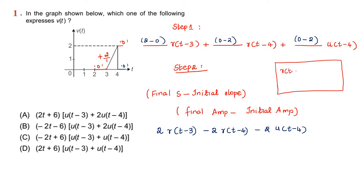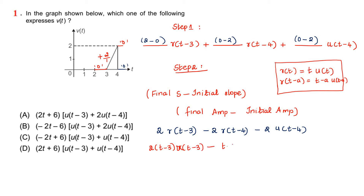How to write R of t minus 1? R of t is the unit ramp signal, written in terms of unit step as t into U of t. For example, R of t minus 3 is equal to t minus A, U of t minus e. In the similar manner, how to write R of t minus 3? 2 into t minus 3 into U of t minus 3, minus t minus 4 into U of t minus 4.